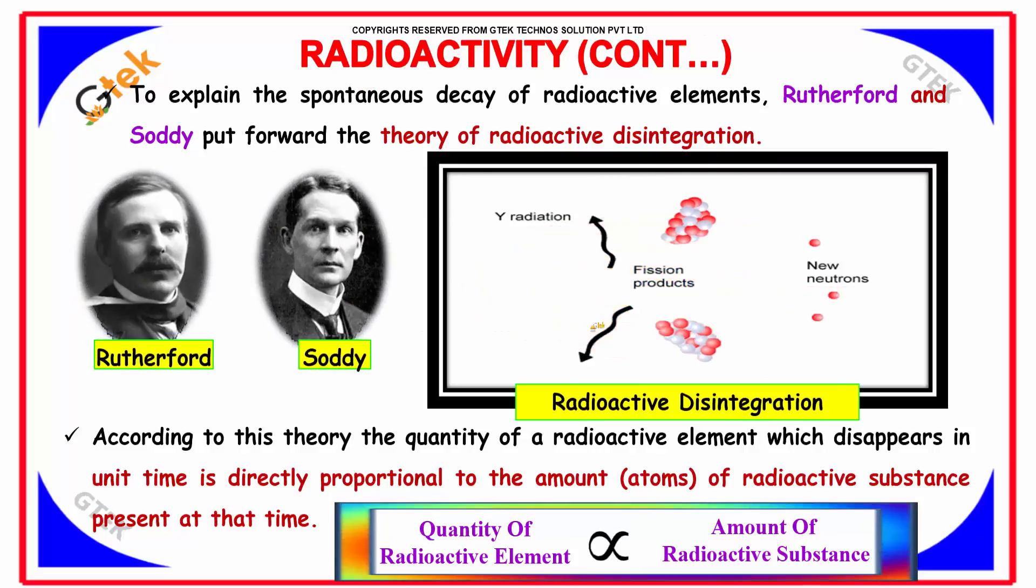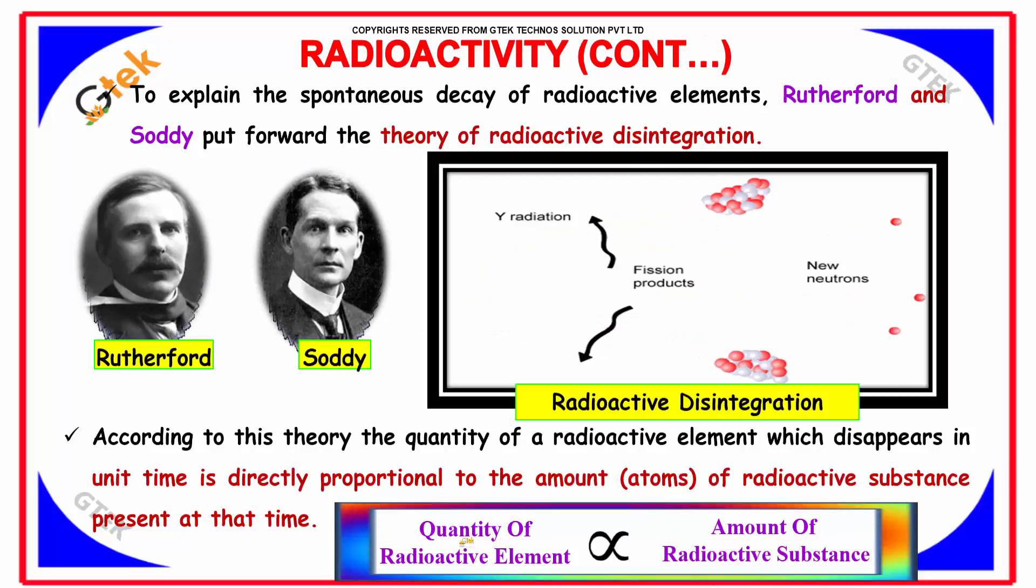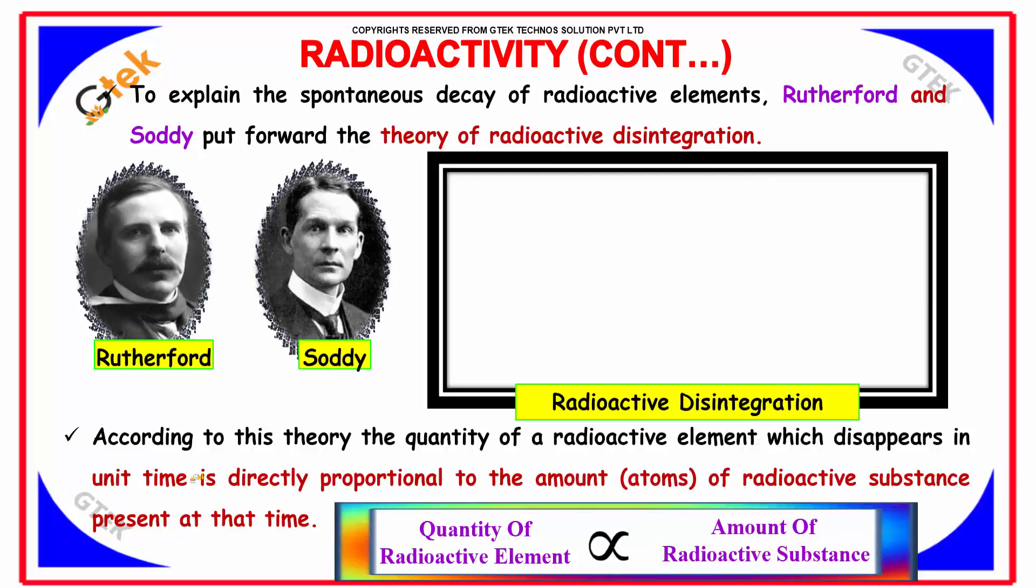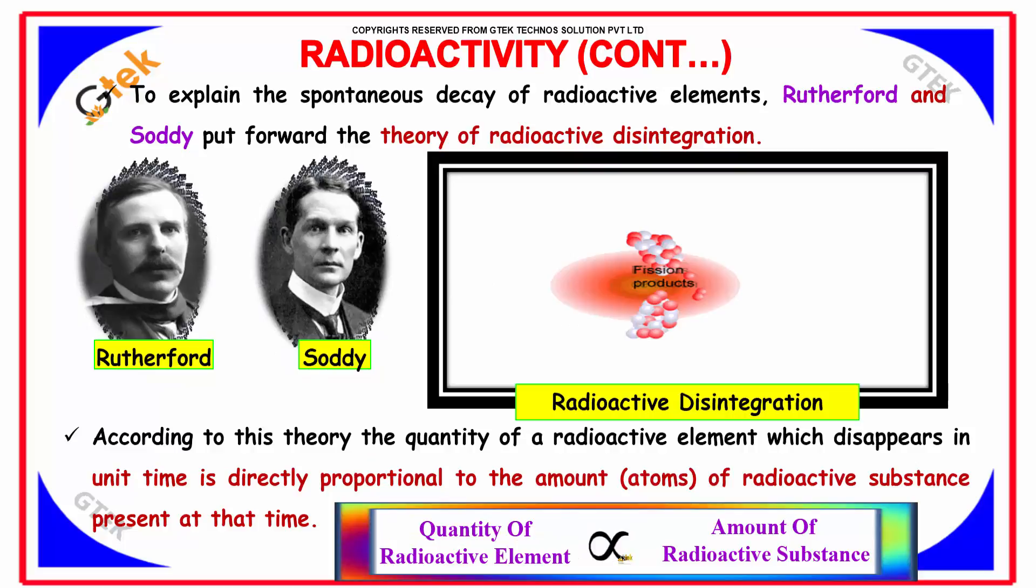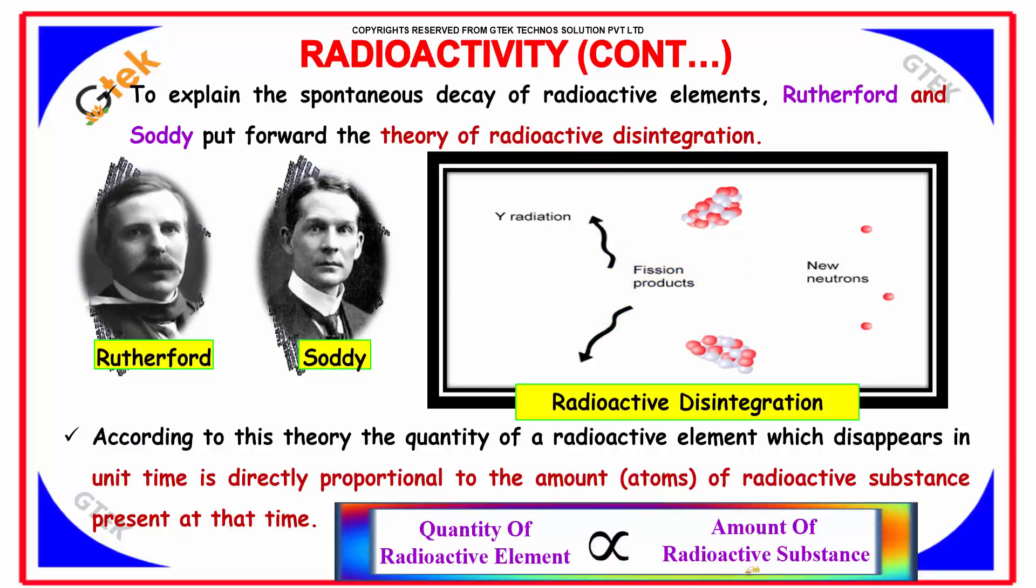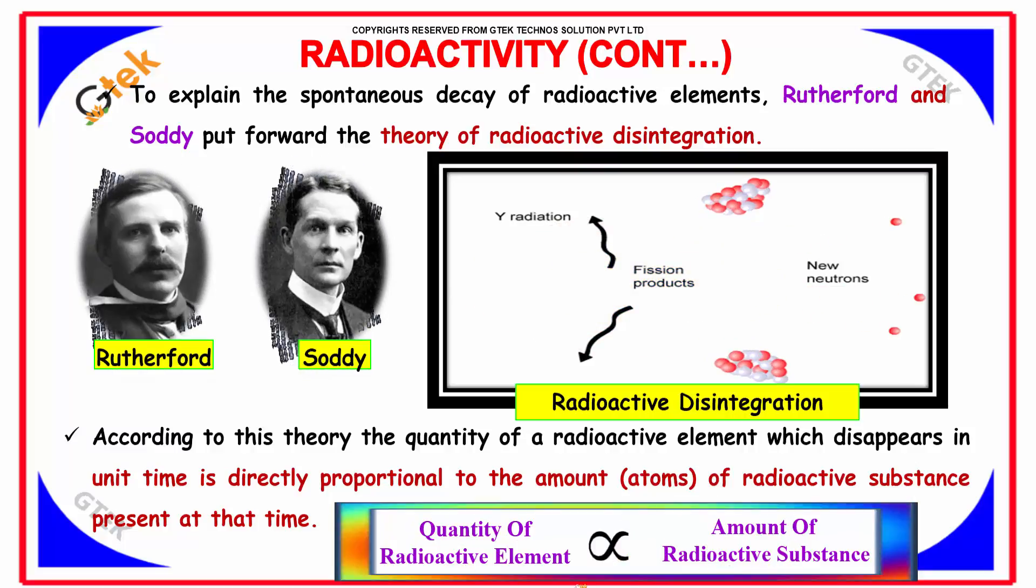According to this theory, the quantity of the radioactive element which disappears in unit time is directly proportional to the amount of radioactive substance present at that time.